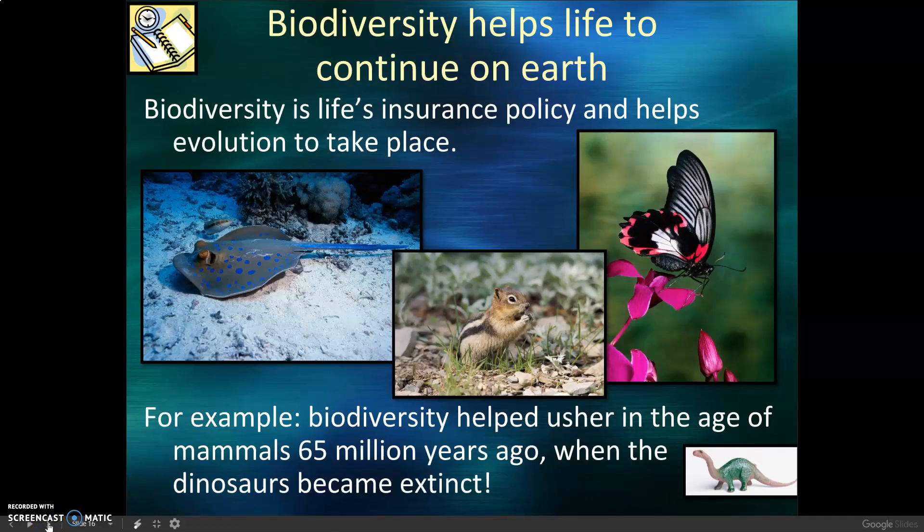Biodiversity helps life to continue on earth. Biodiversity is life's insurance policy and helps evolution to take place. For example, biodiversity helped usher in the age of mammals 65 million years ago.